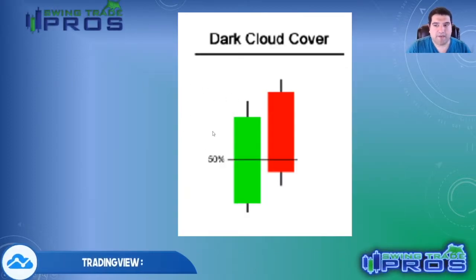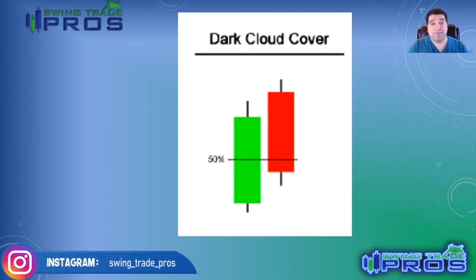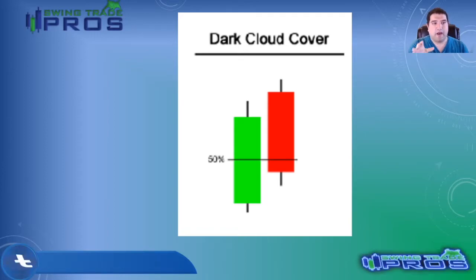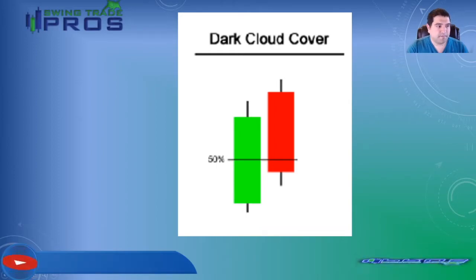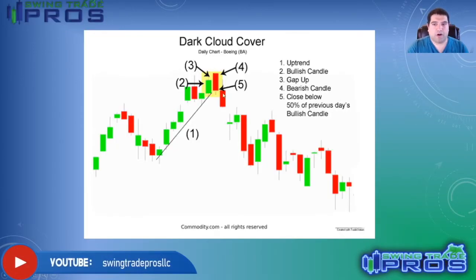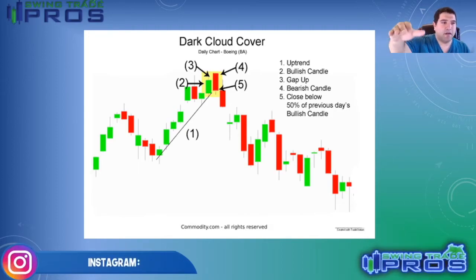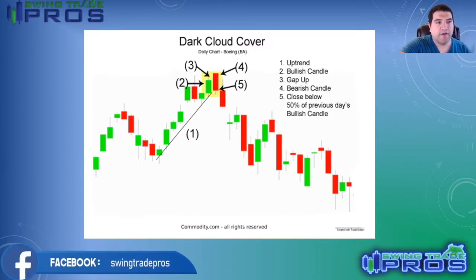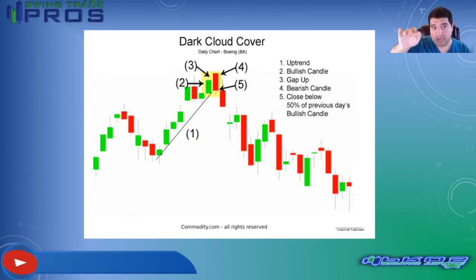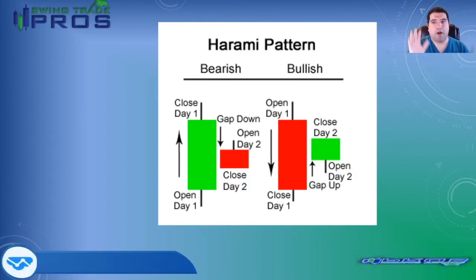Our next candlestick pattern is dark cloud cover, which is something similar to what we actually saw in the S&P the other day — I'm going to show you that on a chart very shortly. Here's what dark cloud cover looks like. It's kind of a bearish engulfing candle, but it's called dark cloud cover because the top of the candle body is actually above that green candle, creating that cloud over top of it.